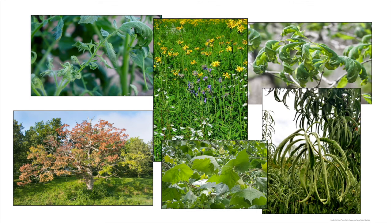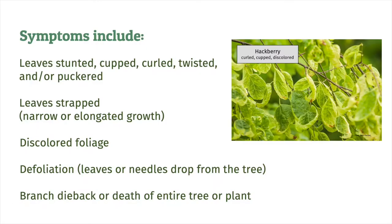Try to make several observations throughout the season. The most common symptoms observed are leaves that are stunted, cupped, curled, twisted, and/or puckered. But you may also observe leaves that are strapped or appear to be stretched out, or have discolored foliage. In extreme cases, you may observe defoliation, branch dieback, or whole tree or plant death.